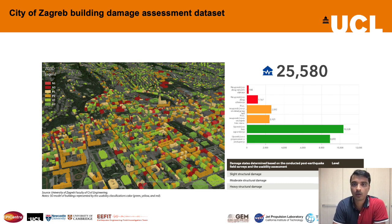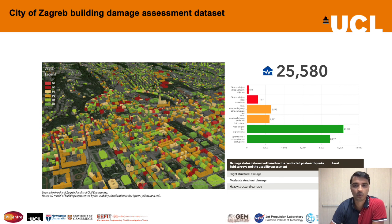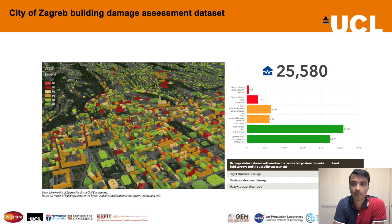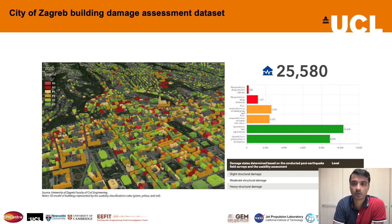The initial post-earthquake damage and usability assessment survey was developed according to Italian experiences and adapted to local circumstances. All civil engineers who carried out the inspections underwent brief training, and the damage levels assigned by field experts were color-coded as follows: green-coded buildings were determined to be safe for use, with suggested short-term countermeasures and slight structural damage; yellow-coded buildings were temporarily unusable, with heavy non-structural and moderate structural damage; and red-coded buildings were determined to be unusable due to external risk or heavy structural and non-structural damage.